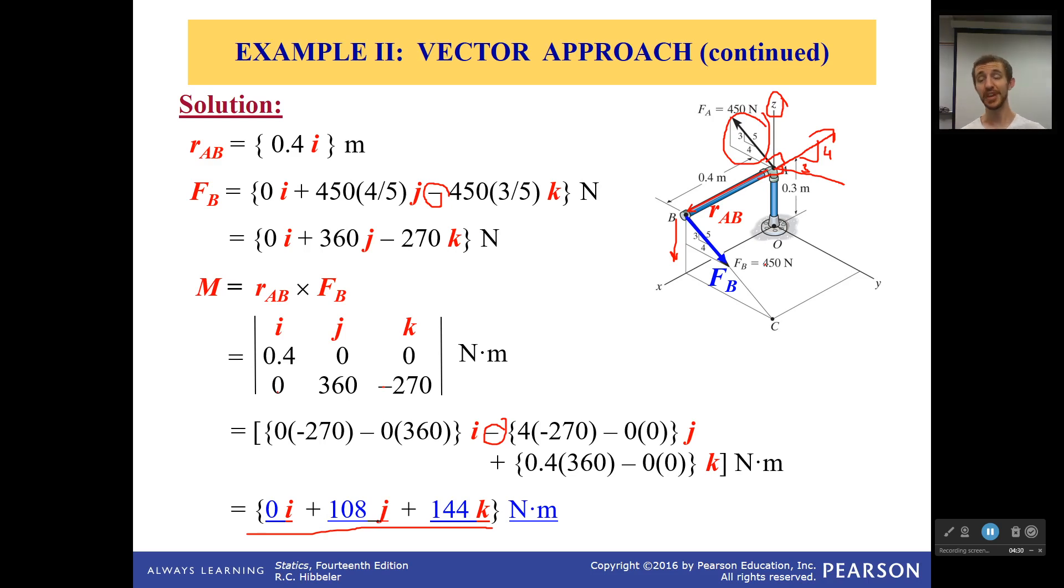Okay, so here we have done the vector approach for solving for a couple moment. Remember, be very careful about your position vector and the force that you use. Your position vector should always point to the force vector that you're going to use for the cross product. Because you can use either one of them. You just have to make sure that you use a position vector that points to that from the other force you're not using. I hope this helps you. And I'll see you all next time as we try out a few more examples. Bye-bye.